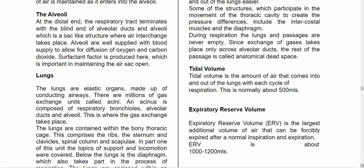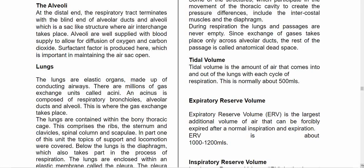The distal end of the respiratory tract terminates in alveolar ducts and alveoli, which are sac-like structures where air interchange takes place. The alveoli are supplied with blood to allow diffusion of oxygen and carbon dioxide. Surfactant is produced here, which is important to maintain the air sacs open, especially for infants. If there is a delay in surfactant production, there is a risk of ARDS — Acute Respiratory Distress Syndrome — or what is called hyaline membrane disease.